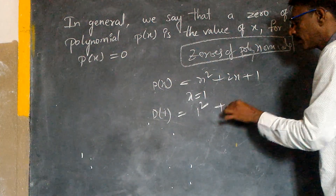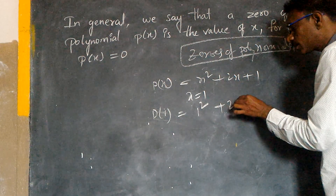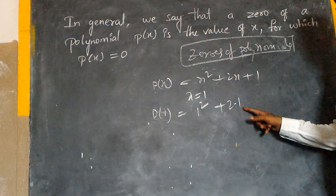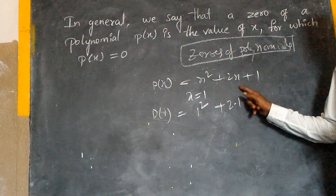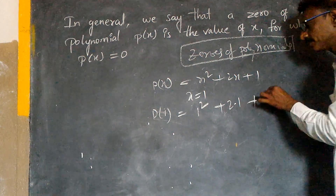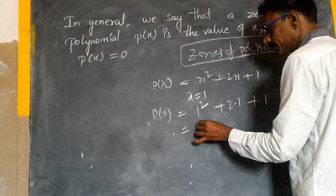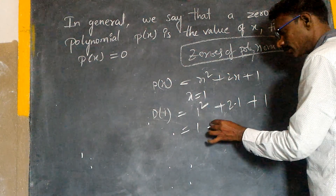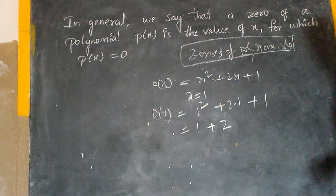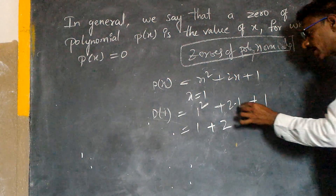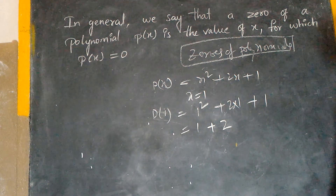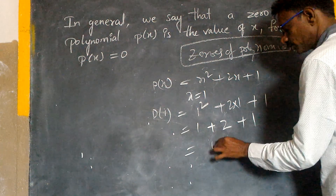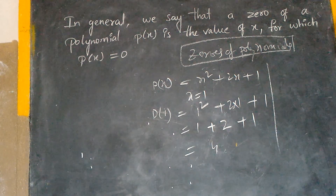One square. Two into one — not twenty one — two times one, two times x, plus one. One square: one. Two into one is two. Into one is the number. Plus one. That is equal to four. That is correct.